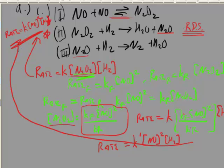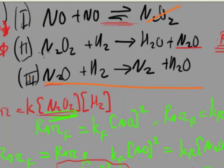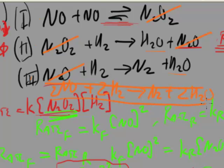To show overall stoichiometry is consistent, we add up the three steps. N₂O₂ and N₂O cancel as intermediates. Summing gives: 2NO + 2H₂ → N₂ + 2H₂O, which is exactly the overall reaction. So the mechanism is consistent both in stoichiometry and in rate law.